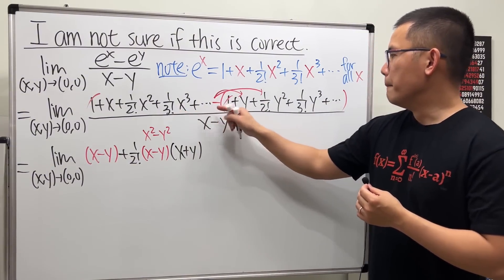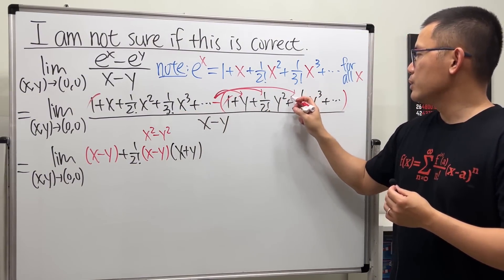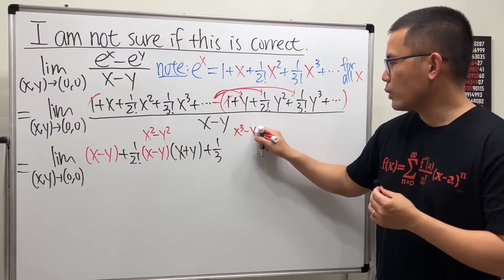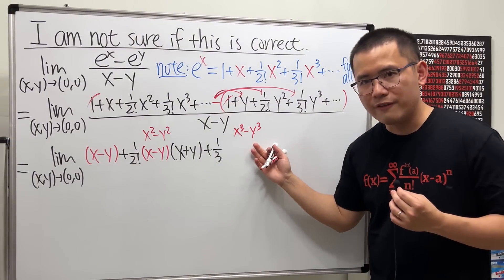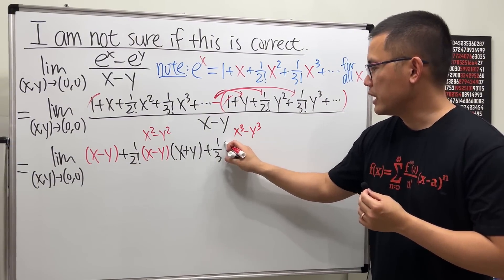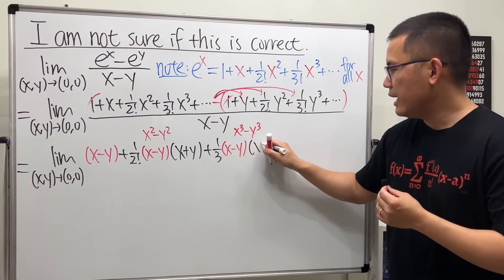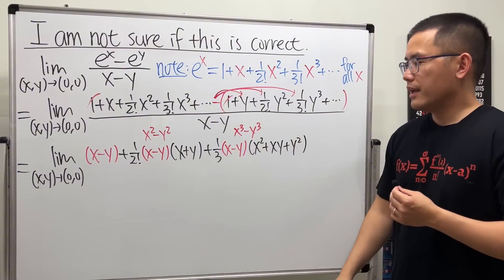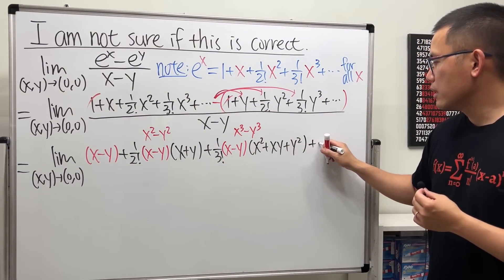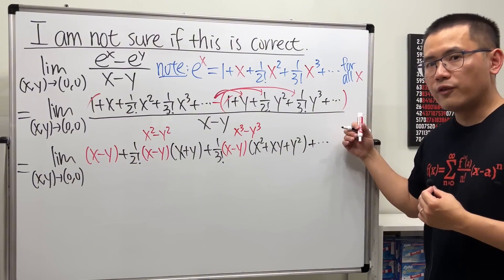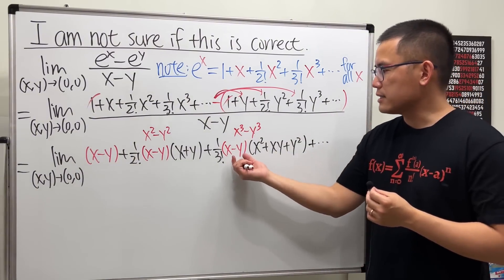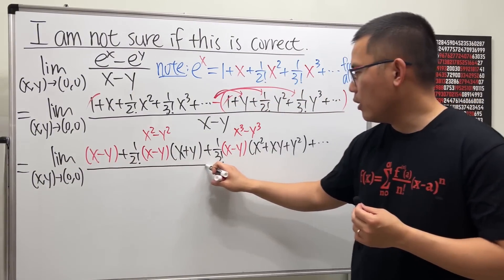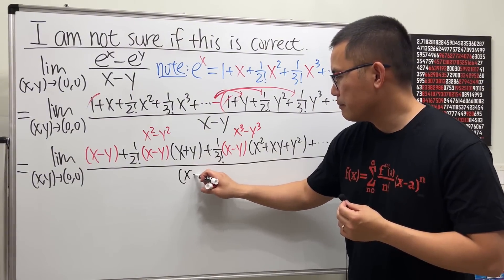Next, factoring out one over three factorial from the cubic terms, we have x cubed minus y cubed — difference of two cubes — which factors as (x minus y)(x squared plus xy plus y squared). You can keep going: x to the fourth minus y to the fourth is still factorable and still has (x minus y) as a factor. This pattern continues for all terms, all over the denominator x minus y.